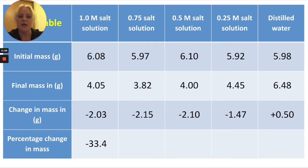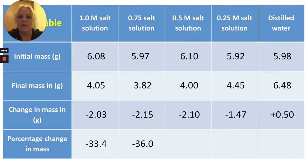Do the same for the other calculations, and you should get results that look like this. That is working out the change in mass of negative 2.15 grams compared to the initial mass of 5.97 grams. So you do 100 divided by 5.97 times negative 2.15, and that gives you negative 36%. Again, we can see it's decreased in mass.